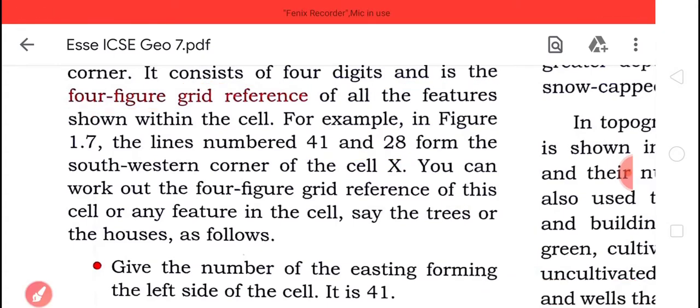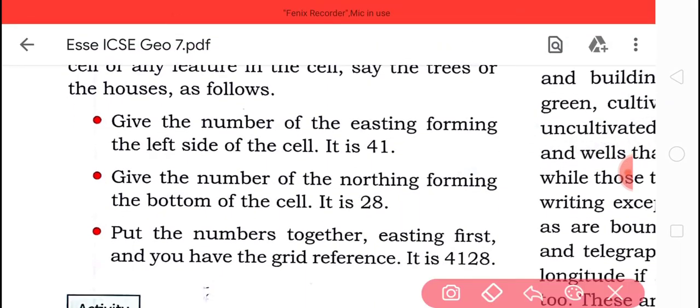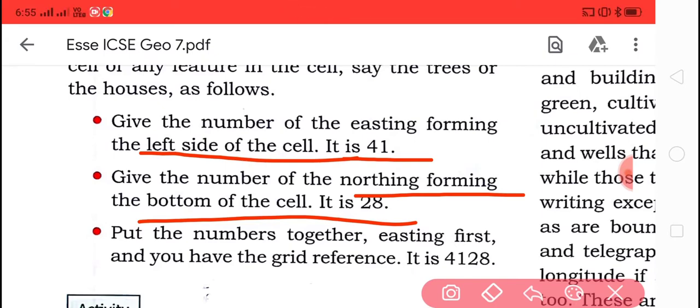Give the number of the easting forming the left side of the cell, that is 41. Give the number of the northing forming the bottom of the cell, it is 28. Put the numbers together, easting first, and you will find 41 and 28. That is, first is the easting digit, we put 41, and then northing 28. So by understanding these both references of the grid, we can locate things.